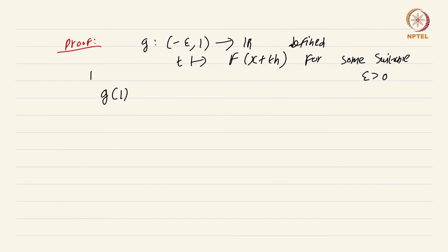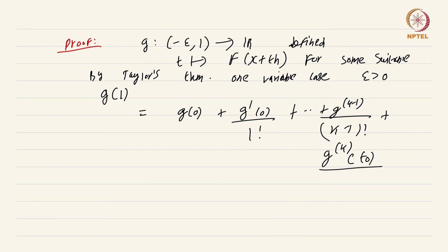Then usual Taylor's theorem gives g of 1. By Taylor's theorem, one variable case, we get g of 1 is nothing but g of 0 plus g prime 0 by 1 factorial plus dot dot dot g power k minus 1 by k minus 1 factorial plus g the kth derivative at t_0 by k factorial where t_0 lies in (0,1). This is just the classical Taylor's theorem.